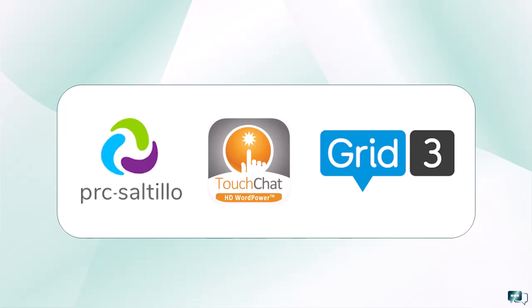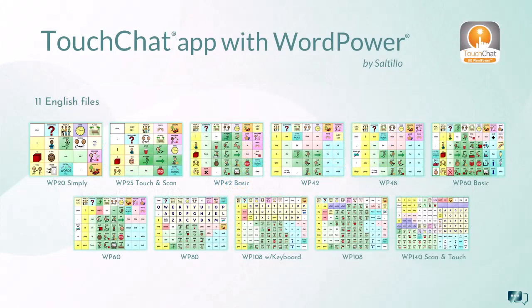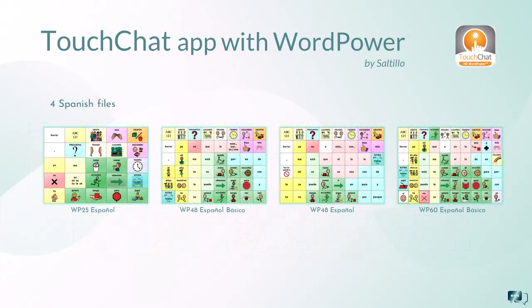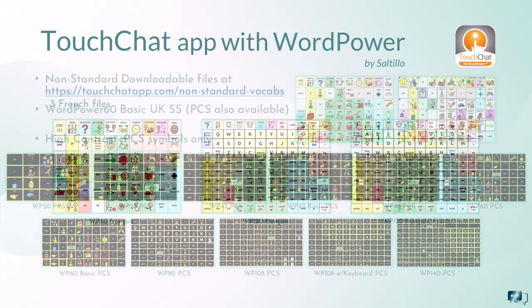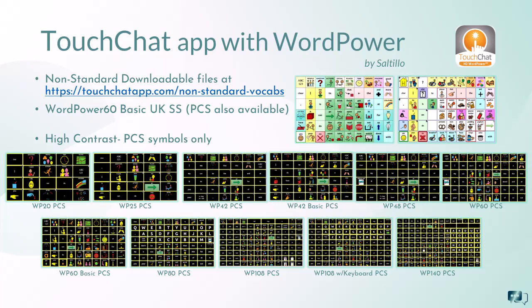Let's take a look at the page layouts and language options offered in each. All files are customizable to meet individual needs and preferences. The Touch Chat app includes 11 English files with page arrangements ranging from 20 to 140 buttons. Symbol sticks and PCS symbol options are available. Spanish files are available with four page layouts of 25 to 60 buttons. Three French files include page layouts with 60 to 120 buttons. There are some non-standard files available for download for the Touch Chat app, including the 60 basic version for the UK, as well as high contrast PCS symbol files.